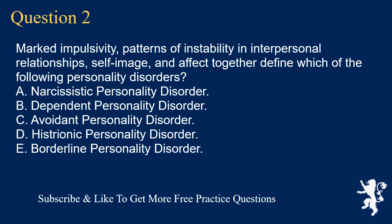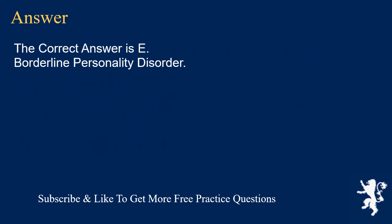Question 2. Marked impulsivity, patterns of instability in interpersonal relationships, self-image, and affect together define which of the following personality disorders? A. Narcissistic personality disorder. B. Dependent personality disorder. C. Avoidant personality disorder. D. Histrionic personality disorder. E. Borderline personality disorder. The correct answer is E. Borderline personality disorder.